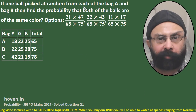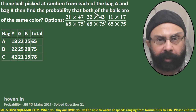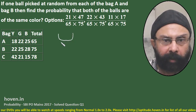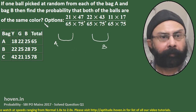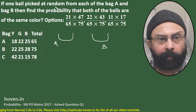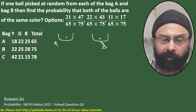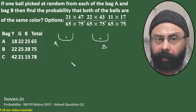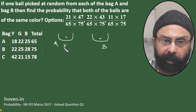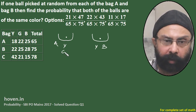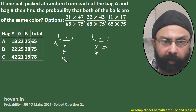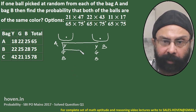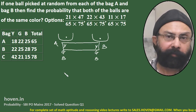If one ball is picked at random from each of bags A and B, then the probability that both balls are of the same color is what? A diagram would help: pick one ball from bag A and one from bag B. The probability that both are the same color means: both yellow, or both green, or both black.